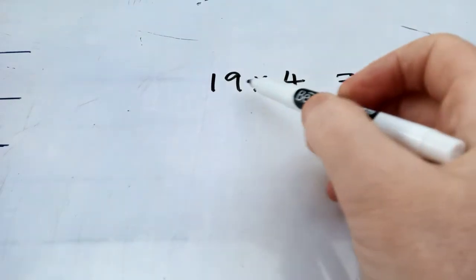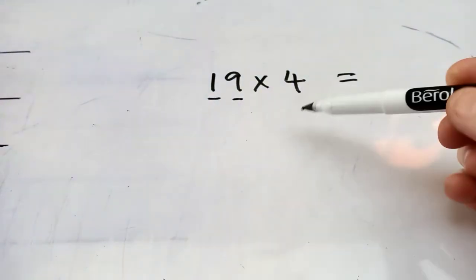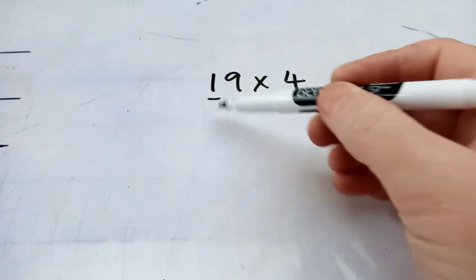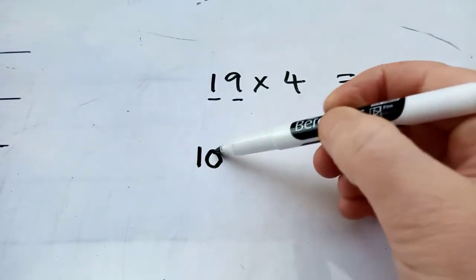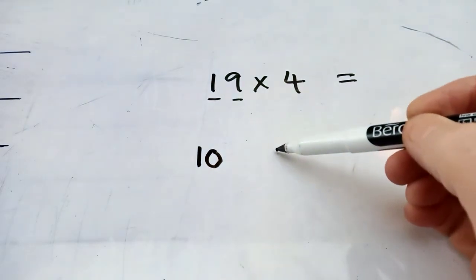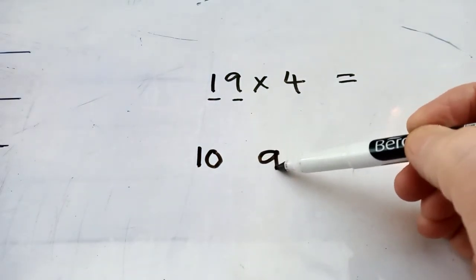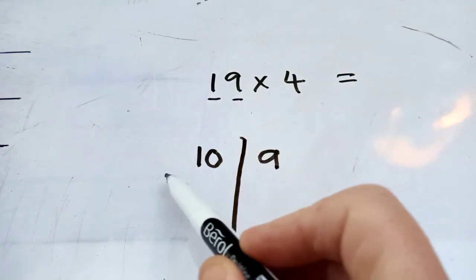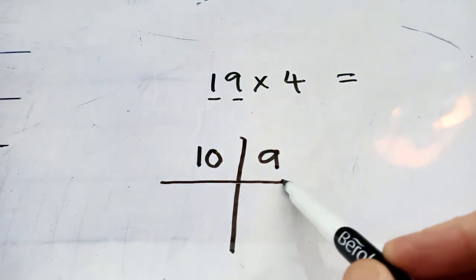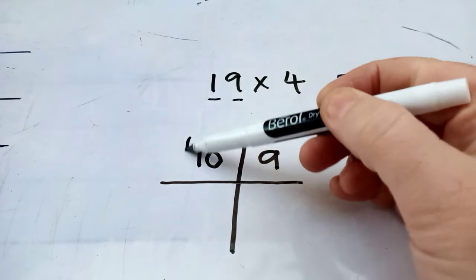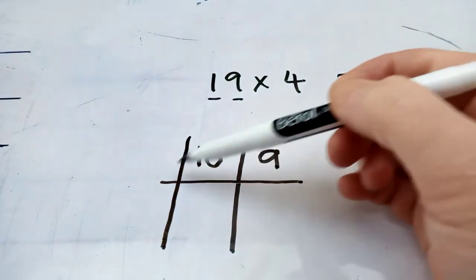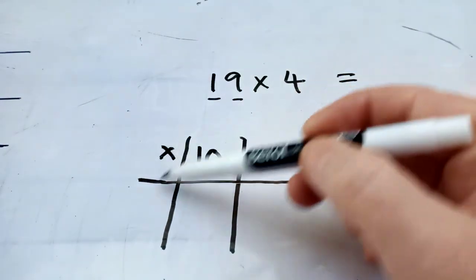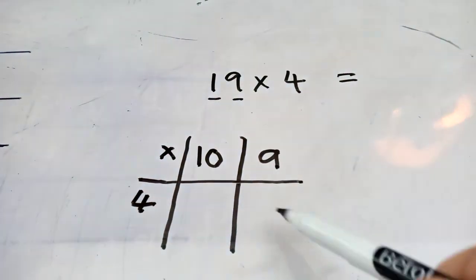There's my calculation. I take my bigger number, my two-digit number, and I put them here. I partition it. So, I'm partitioning it into a 10 and into a 9. I draw my grid. I need one more down there. And then here, what am I timesing it by? I'm timesing it by 4.